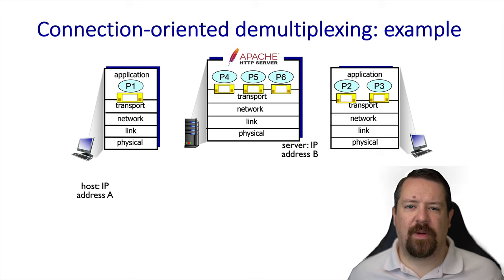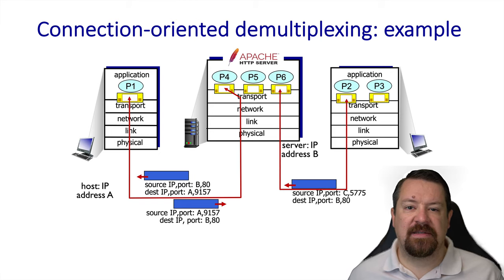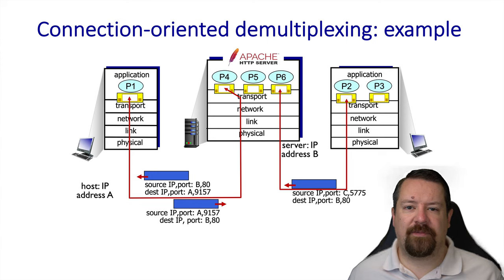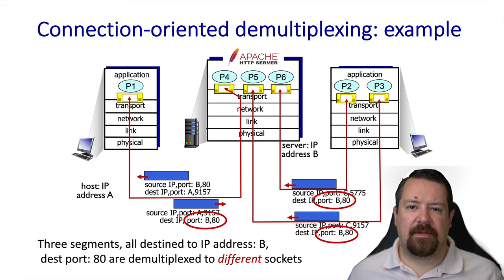Let's see an example. We have a web server running multiple processes, each with their own socket, and two clients that want to connect. Host A sends a message from its port to port 80 on the web server — port 80 is reserved for HTTP. This ends up communicating with process 4 on the server, and the server responds back from port 80 to port 9157 on host A. When host C communicates with the server, it's still using port 80, but the segment arrives at a different socket because the client's information is different. With a connection-oriented protocol, each socket can only communicate with one remote client. Host C is also running another process that communicates with the same server, but it uses a different local port number, so the server uses different sockets to communicate with processes 2 and 3 on host C — that's how multiple sockets can all use port 80 on the server.